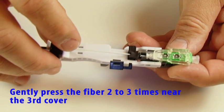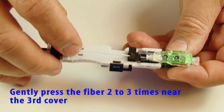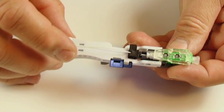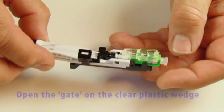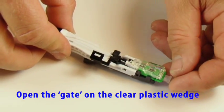Gently press the fiber two to three times near the third cover. Open the gate on the clear plastic wedge.